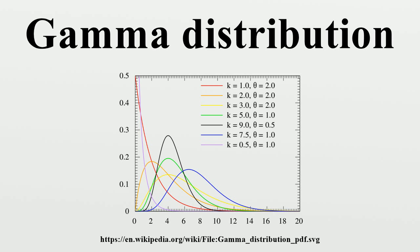In neuroscience, the gamma distribution is often used to describe the distribution of inter-spike intervals. In bacterial gene expression, the copy number of a constitutively expressed protein often follows the gamma distribution, where the scale and shape parameters are, respectively, the mean number of bursts per cell cycle and the mean number of protein molecules produced by a single mRNA during its lifetime. In genomics, the gamma distribution was applied in the peak calling step in ChIP-chip and ChIP-seq data analysis. The gamma distribution is widely used as a conjugate prior in Bayesian statistics — it is the conjugate prior for the precision of a normal distribution and also for the exponential distribution.